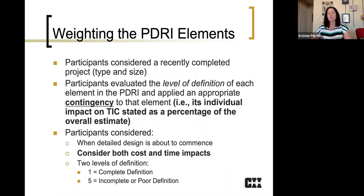If I had complete definition for this element, what contingency would I apply or assign to that? And if I had unclear or poor definition at that point just before detailed design and construction, how much contingency would I apply? They would list both of those and that would provide anchor points for the research team to determine how important was element A1, for instance, in relation to element A2, A3, A4, etc.